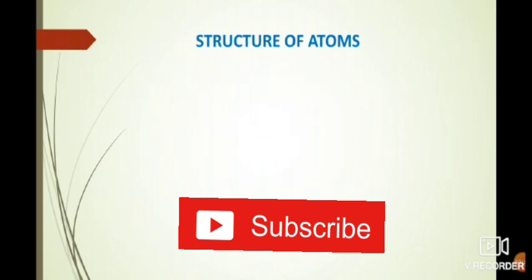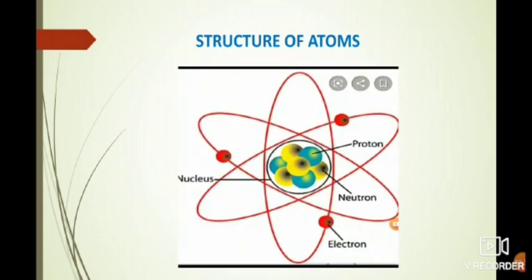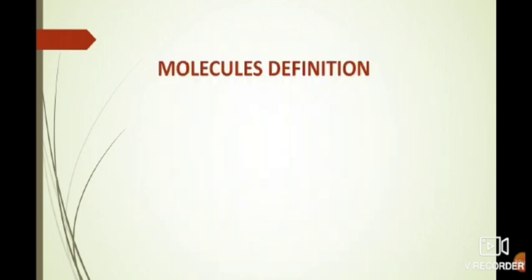Let us start with an introduction about atom. Atom is the smallest substance we are not able to see under the naked eye, and atom is made up of proton, neutron, and electrons. Atom is the building block of matter.